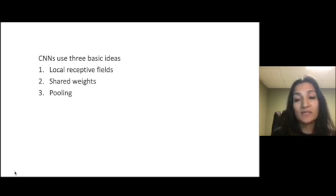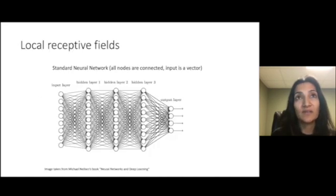In pooling which summarizes whether we found the structure that we were looking for in parts of the image and these three ideas together are largely responsible for the success of deep neural networks and image processing via convolutional neural networks.